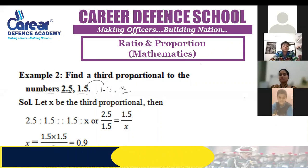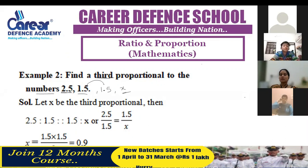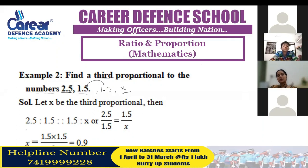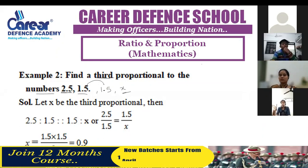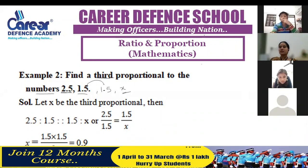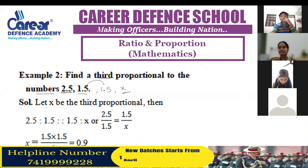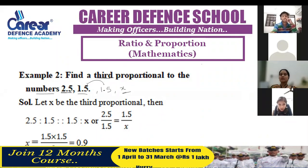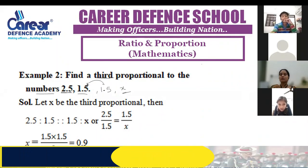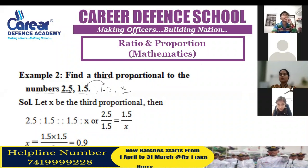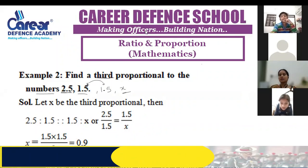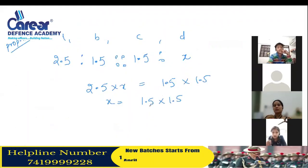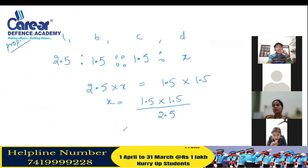Student (Daks): Ma'am, how did you get the value of x? That seems like a mistake — 2.5 is also coming. Student (Naqshatr): I have not come to understand this. Teacher: What value did you get for x? Student: I have 0.9. Teacher: I will tell you. Let us check.